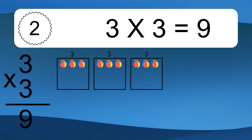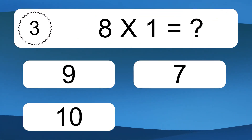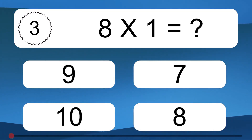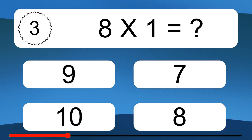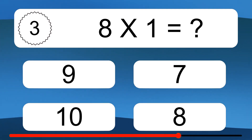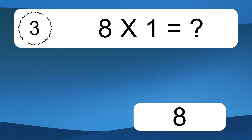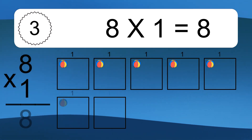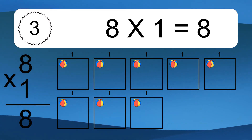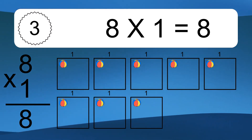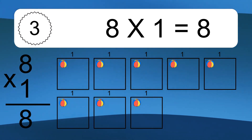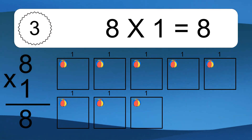This equals 9 balls. 8 times 1 equals what? 8 times 1 equals 8. We have 8 boxes, and each box has 1 colorful ball inside. If you count all the balls in all the boxes together, you will have 8 times 1 balls. This equals 8 balls.